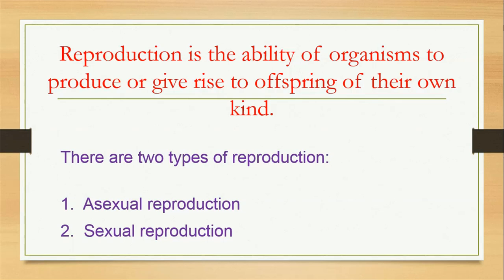Students, it is wrong to define reproduction as the ability of organisms to give birth to their young ones. Remember, reproduction is one of the characteristics of living things. Plants and animals are the living things we have on Earth. Plants can never give birth to their young ones. Animals such as fish, reptiles, amphibians, and birds also cannot give birth — they lay eggs, which hatch into young ones.